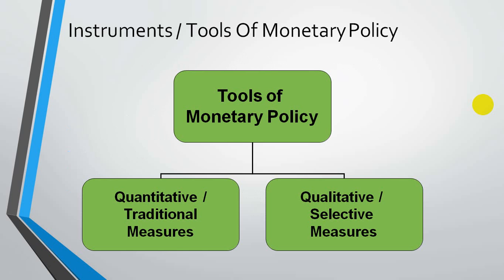Moving further, what are the different instruments used under monetary policy? These tools are divided into two categories. Category one is quantitative tools, also known as general measures, which look into the quantity of money in the economy. Category two is qualitative measures, also known as selective measures — these are actions beyond controlling the volume of credit.